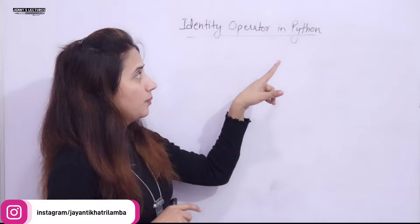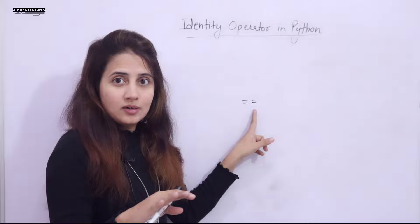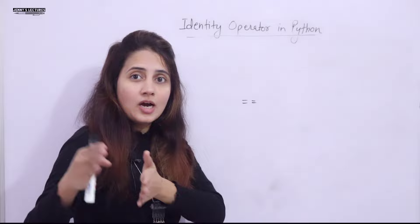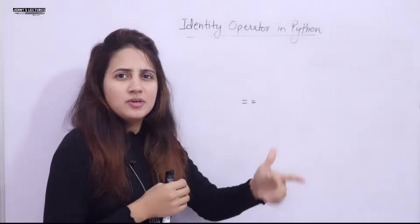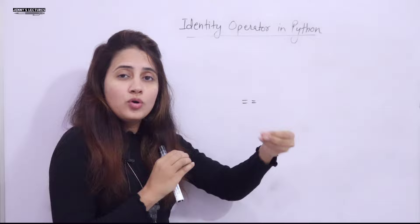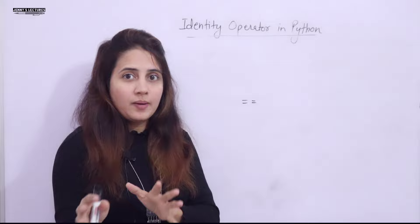Many students get confused between identity operators and equality operators, thinking they are the same. When you see the practical output, you might think the same thing can be done with the equality operator. But the working of these operators is different — the output may sometimes be the same, but what happens behind the scenes is different. We'll see how identity operator differs from equality operator with a real-life example and a program.